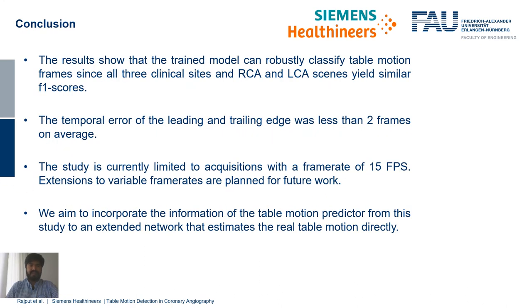In conclusion, the results show that the trained 3D CNN + ConvLSTM Fusion Network can reliably classify table motion frames. All three clinical sites and both RCA and LCA sequences yield similar F1 scores. The temporal error of the leading and trailing edge was less than two frames on average, which can easily be accounted for in a simple post-processing step when selecting suitable calibrated frames for 3D modeling of the arterial tree.